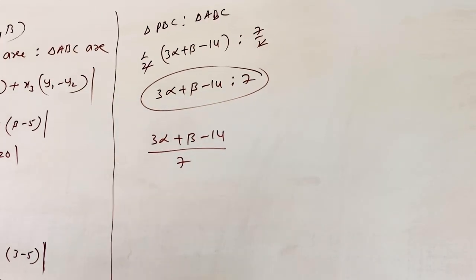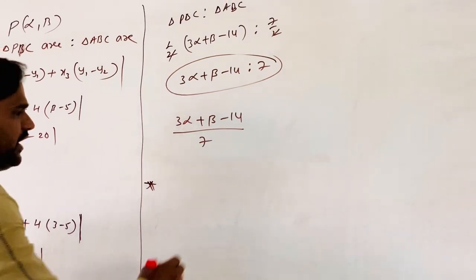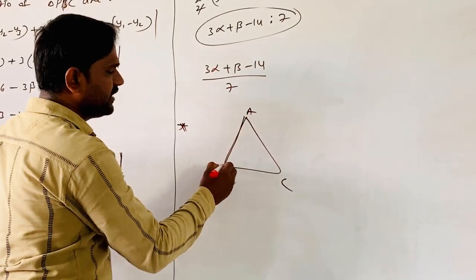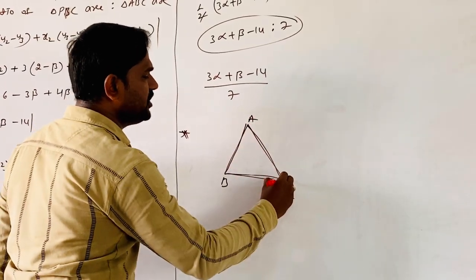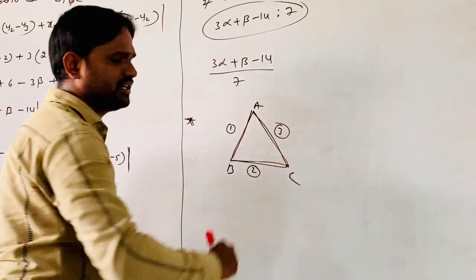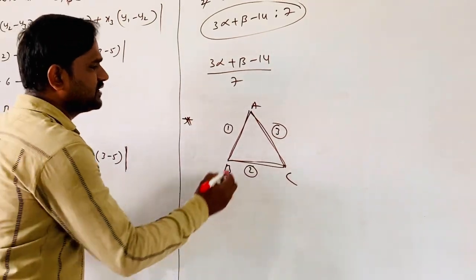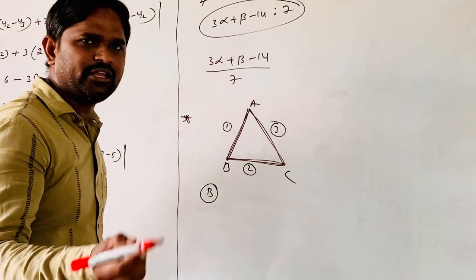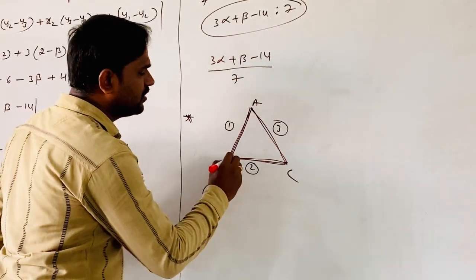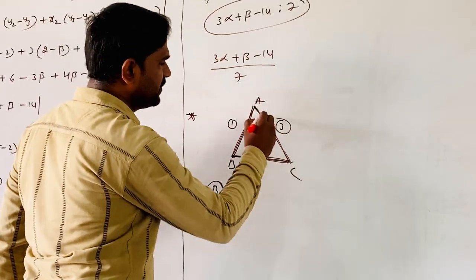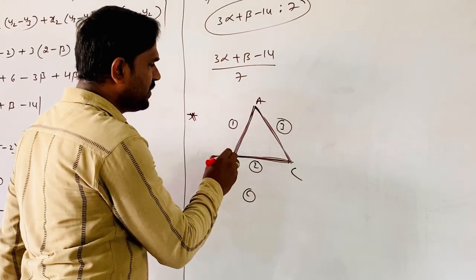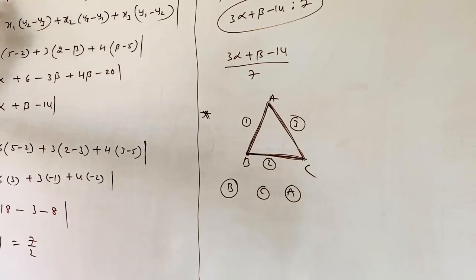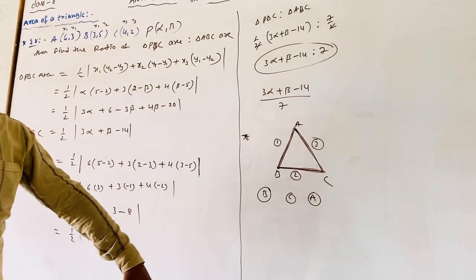If they give three vertices, we find the area of a triangle like this. If they give the equations of the three sides of a triangle — equations AB, BC, and AC — we will solve pairs of equations. AB and BC intersection gives vertex B; equations 2 and 3 intersection gives C; equations 1 and 3 intersection gives A. After getting the coordinates of A, B, C, we use the area formula.